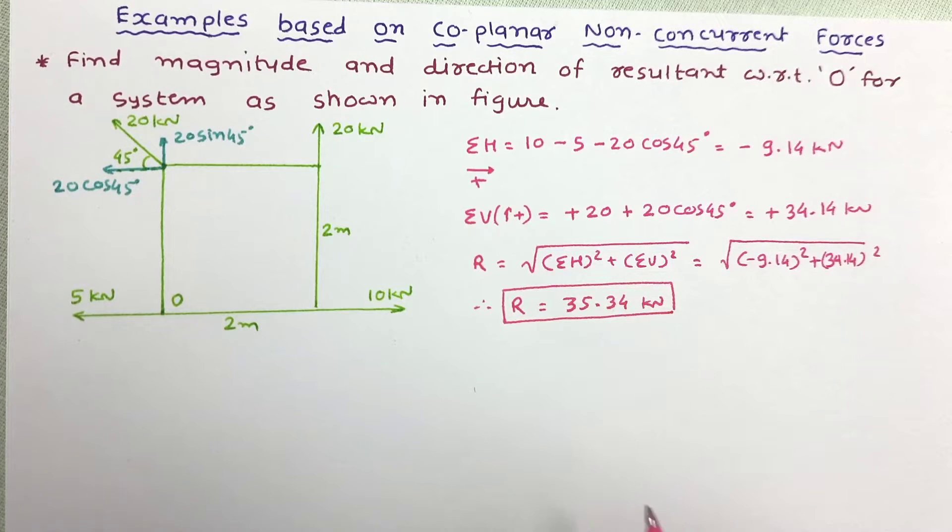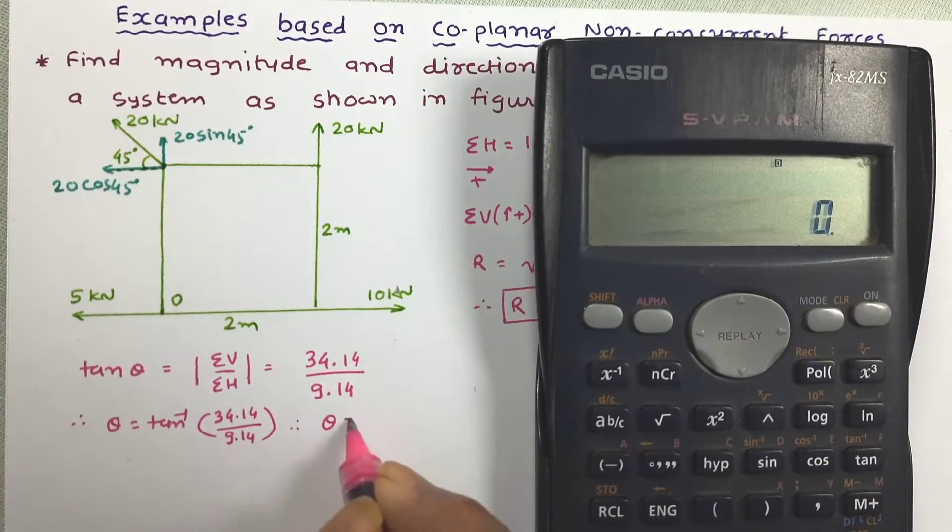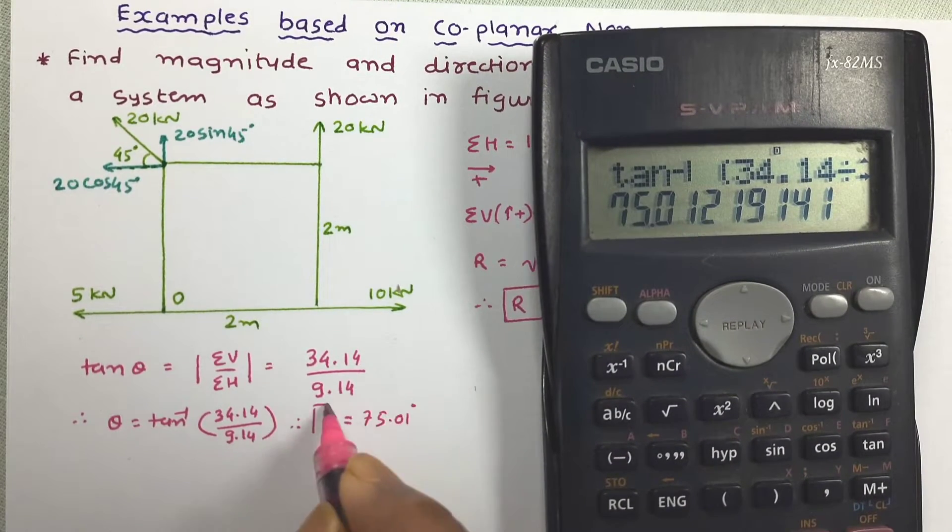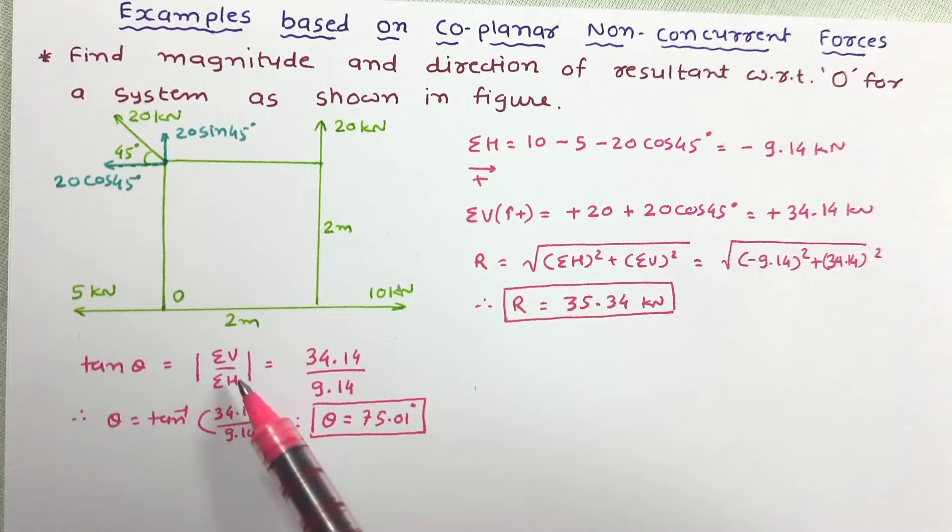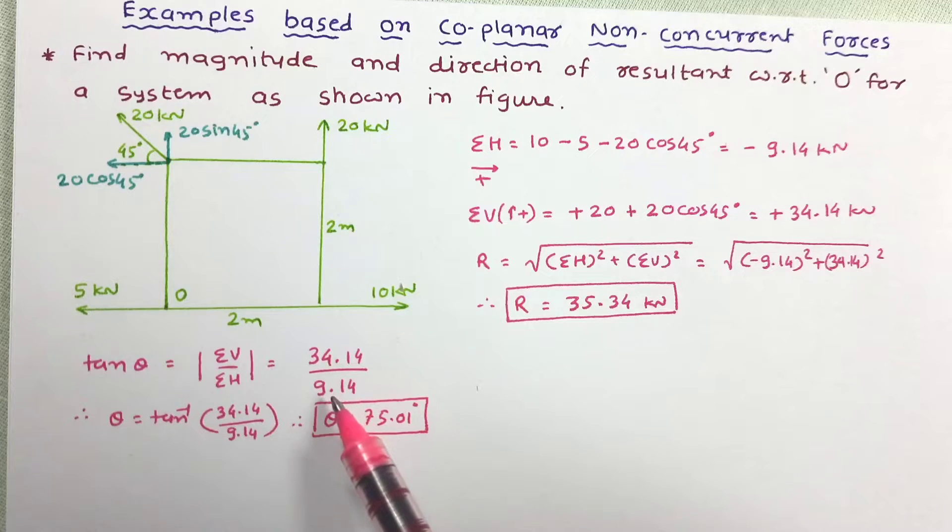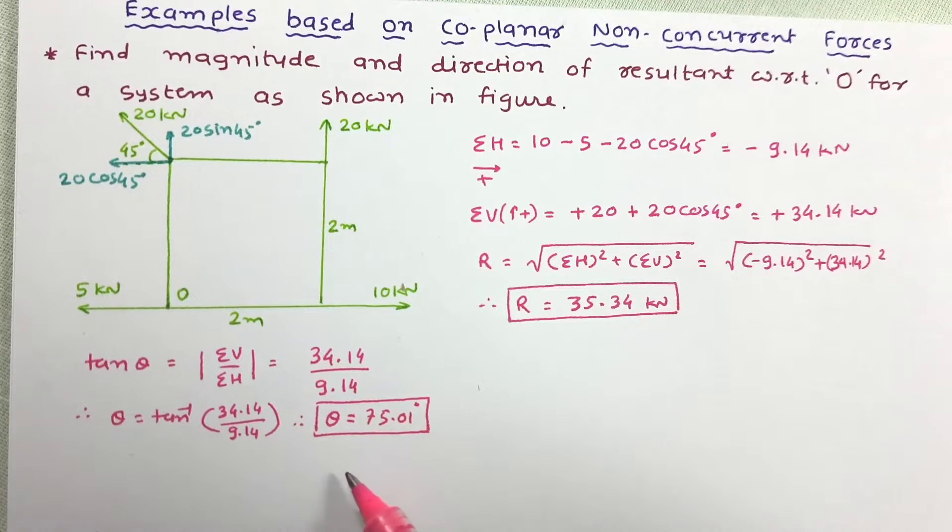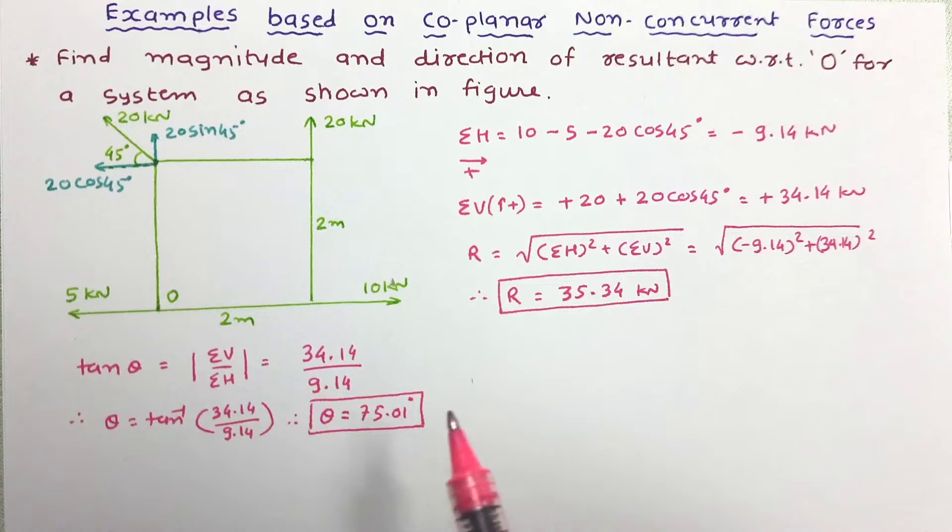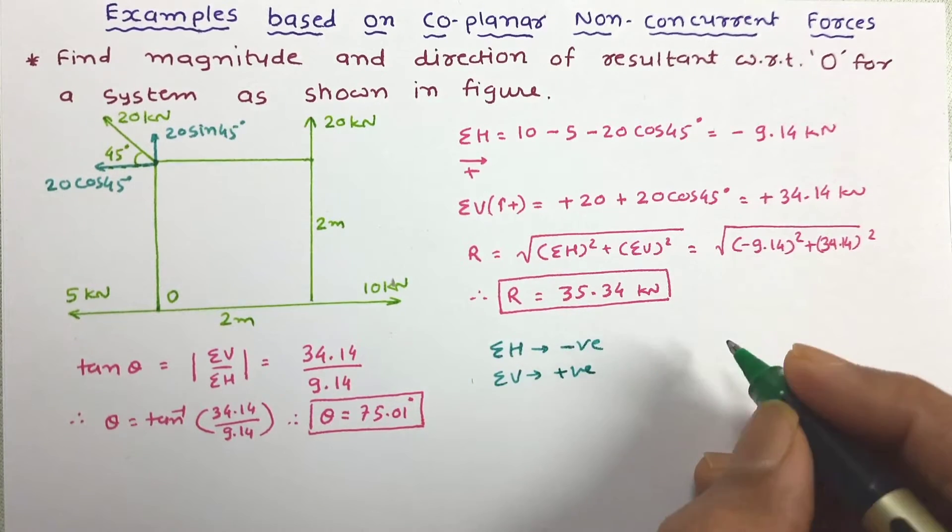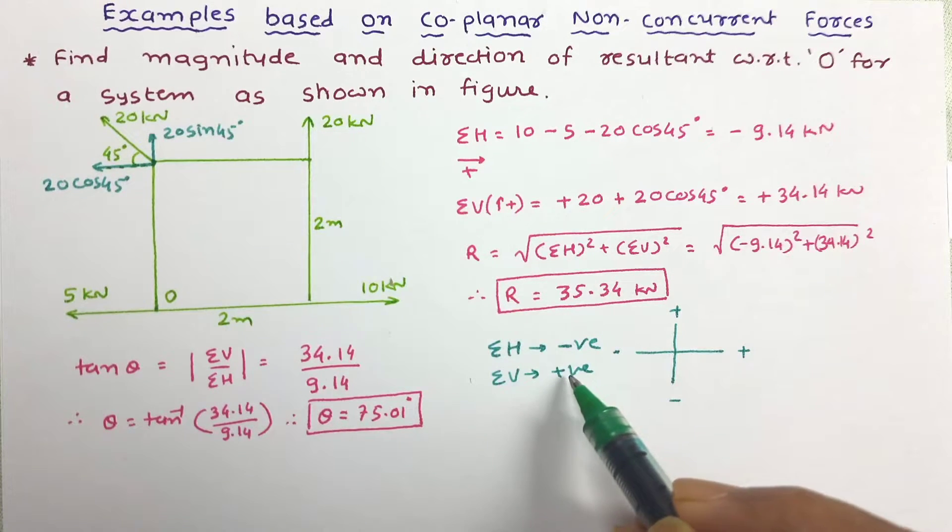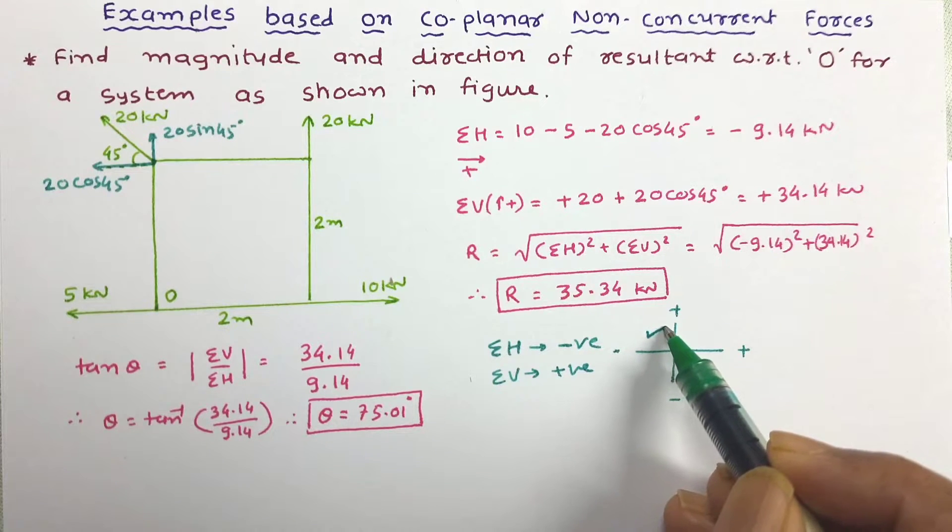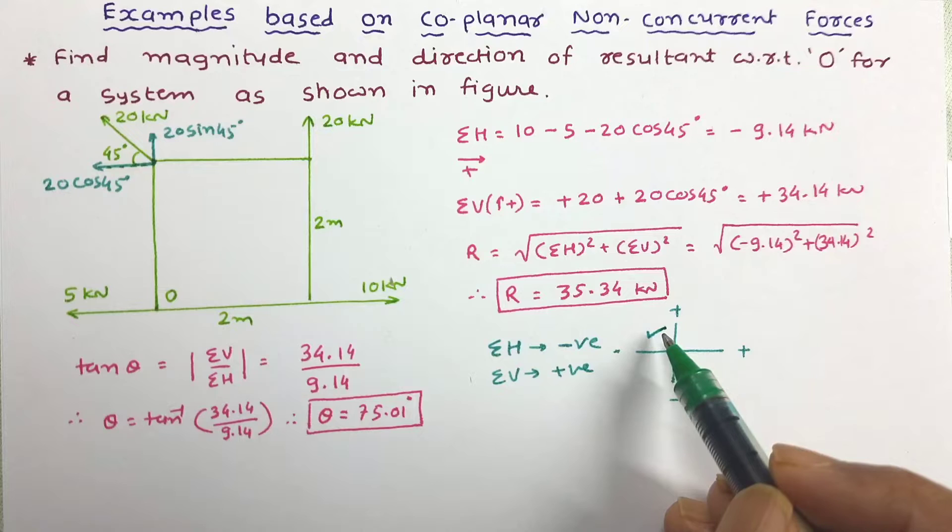Now let us work out the direction of force. This is the equation of direction of resultant force. The value of sigma v and sigma h has been equated and after calculation the value of theta has been obtained as 75.01 degrees. Here the value of sigma h is negative and value of sigma v is positive, so we can say the resultant lies in second quadrant.